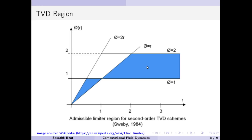I will talk about a few key points in this plot. There is one important point that all limiter functions must pass through. When r is equal to 1, it means the difference between the backward-side change and the forward-side change is the same.